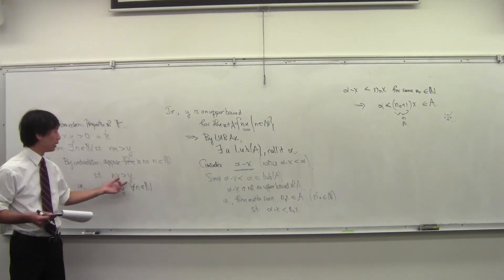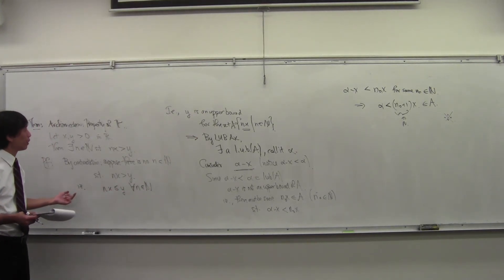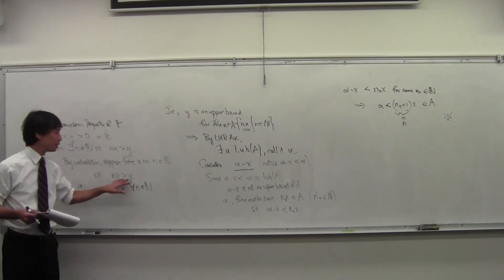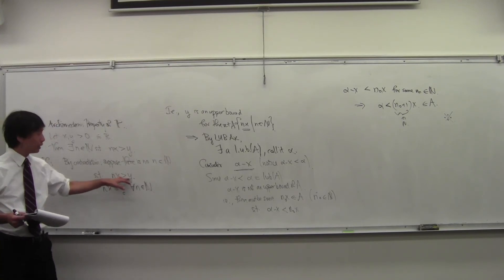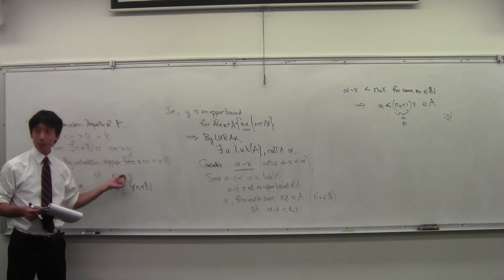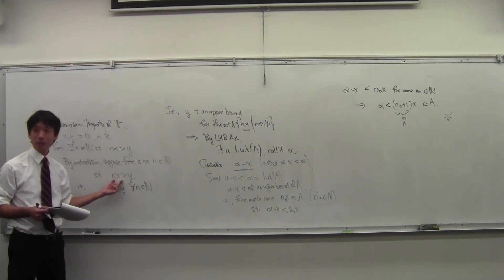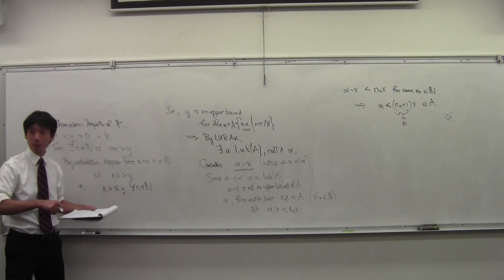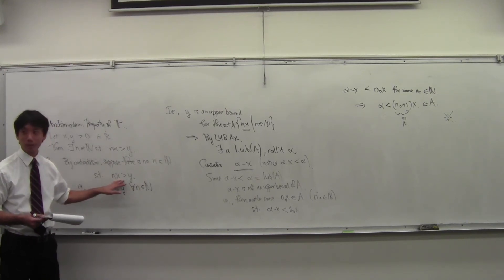So there must be some point where these nx's exceed y. The analogy given in the book: you have a bathtub and a spoon. Y is the bathtub, x is the spoon, and eventually you can empty the bathtub with the spoon. At some natural number n, you will have moved more water than is in the tub. That's what the Archimedean property says.